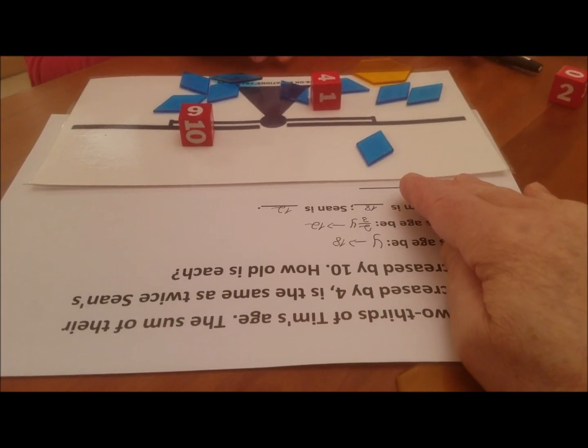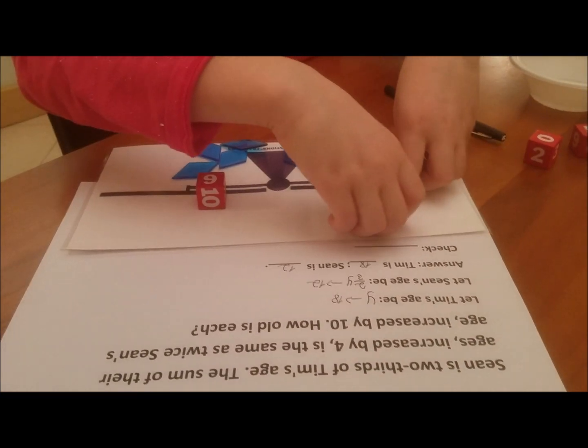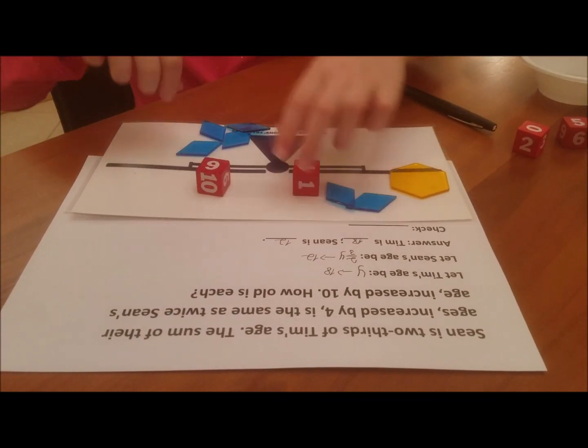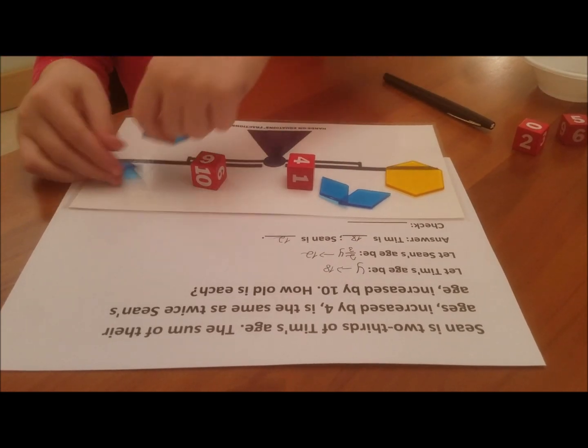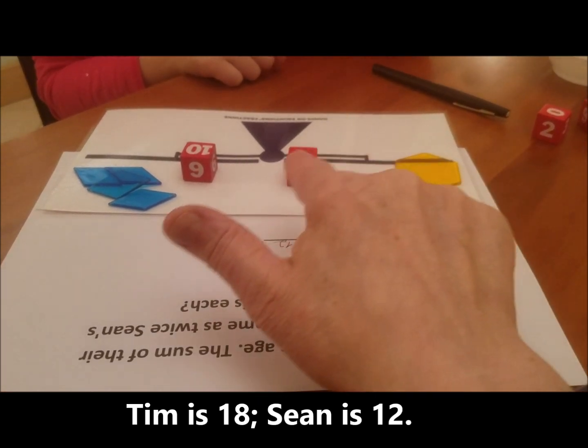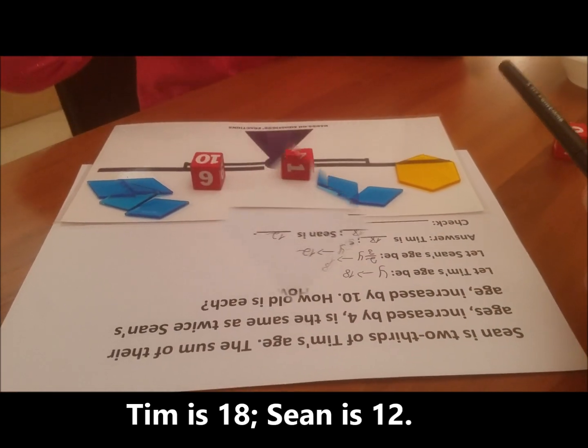Now, we want to do the check. Let's clear the board and let's set up the original problem one more time to see if it works out. We have the sum of their ages increased by four equals twice Sean's age increased by 10. I need you to help me. Can you figure out what we want to do?